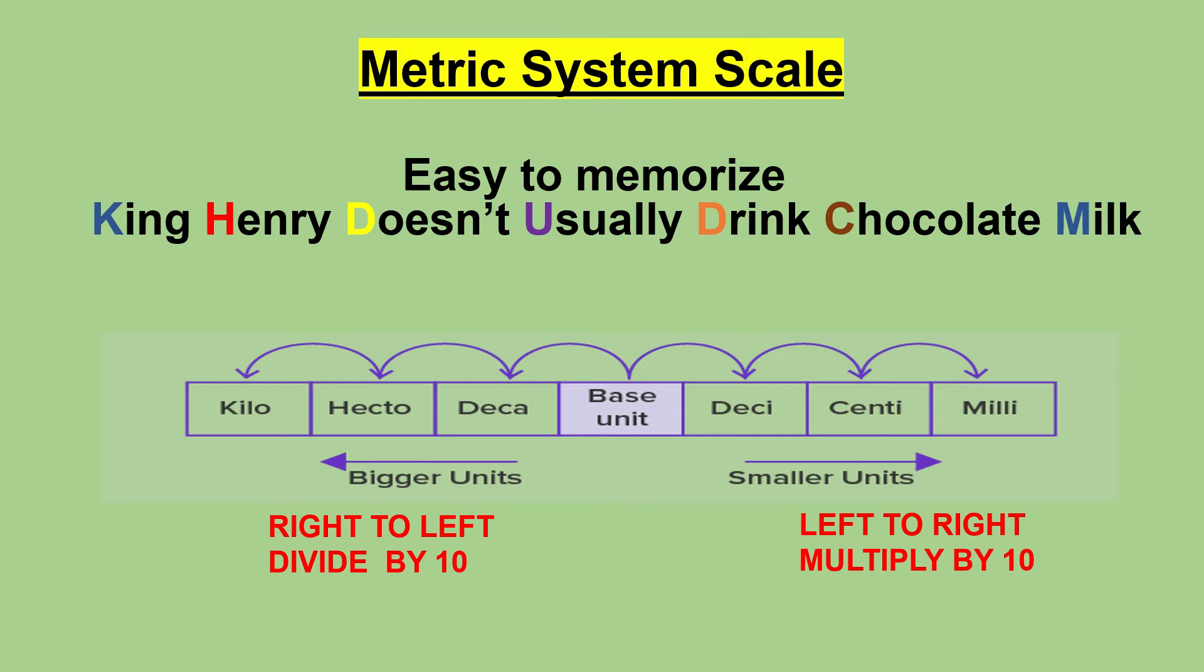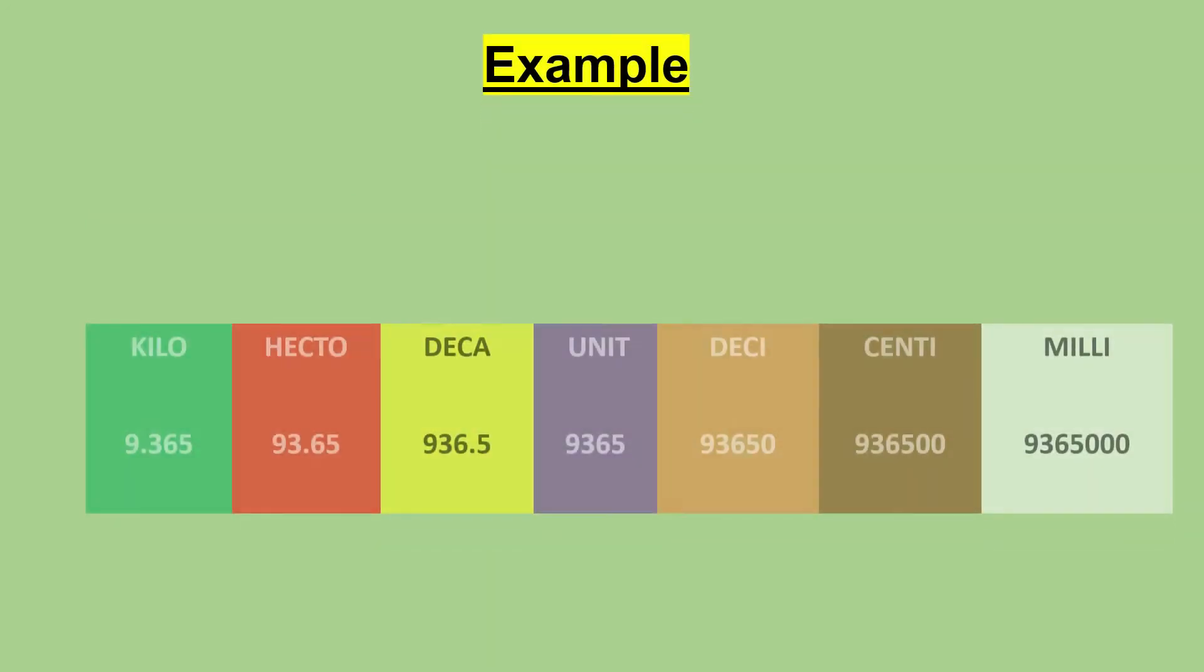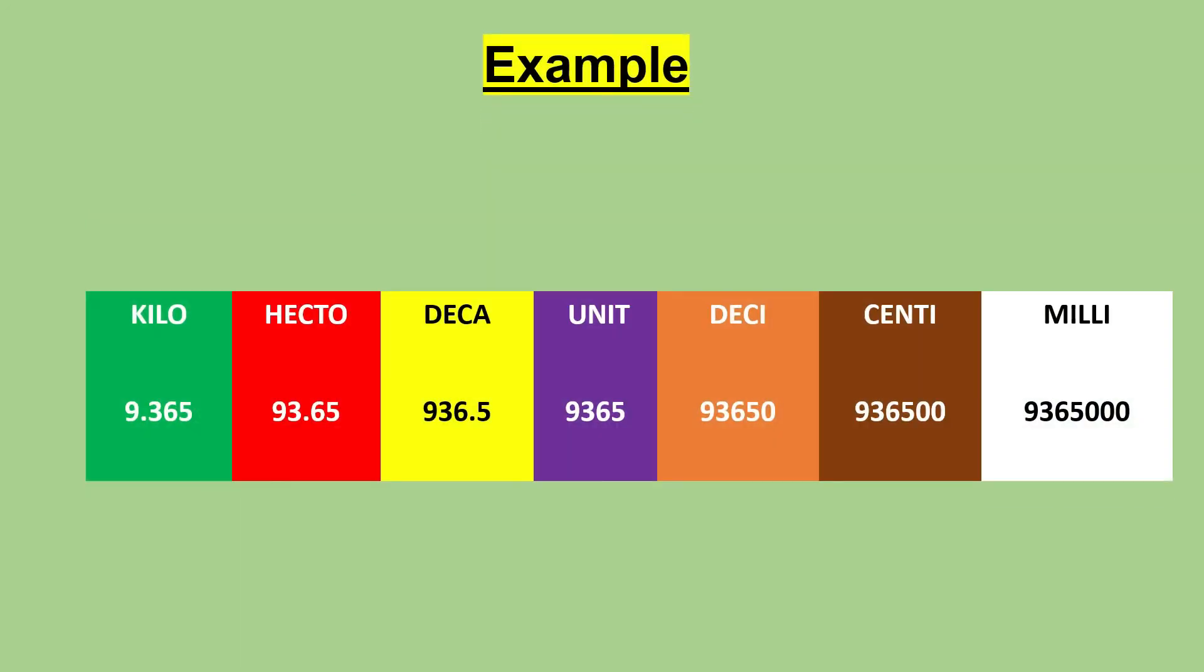For example, 9.365 kilometers is the same as 93.65 hectometers, which is the same as 936.5 decameters, and so on.